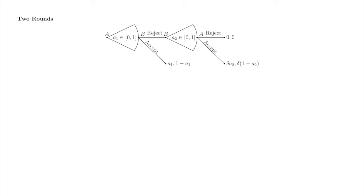Our last example of finite bargaining is two rounds of the ultimatum game stuck together. There are two important innovations. First, look at the payoffs at the very end of the tree if A accepts B's offer: A receives not A2, but delta times A2, and B receives not 1 minus A2, but delta times 1 minus A2. Delta is the so-called discount factor. Delta is strictly greater than 0 and strictly less than 1. The discount factor represents that a fixed quantity of stuff — pie, money, and so on — is less valuable the longer one has to wait for it.